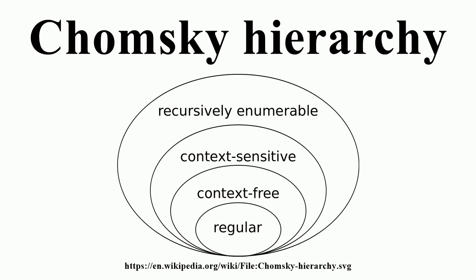Production rules: sentence → noun-phrase verb-phrase; noun-phrase → adjective noun-phrase | noun; verb-phrase → verb | verb noun-phrase; noun → ideas | linguists; verb → generate | hate; adjective → great | green. Start symbol: sentence.